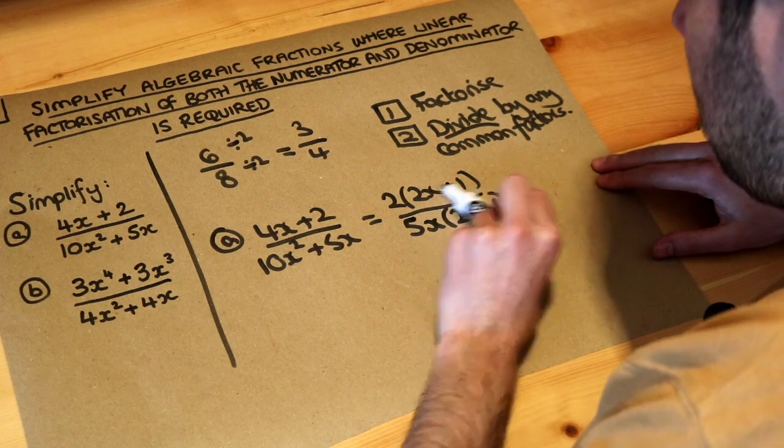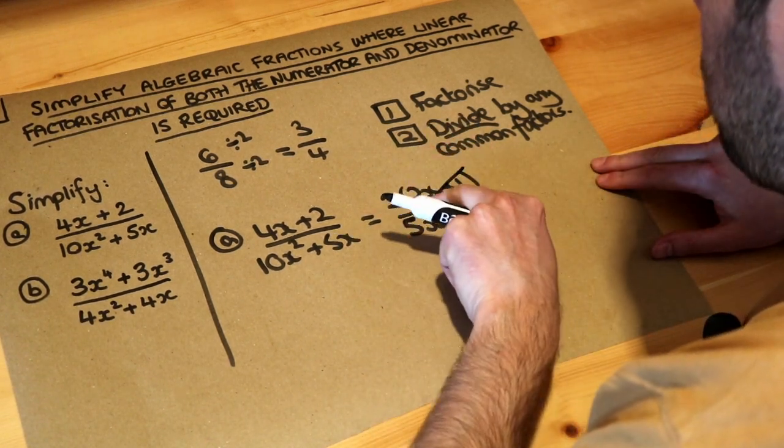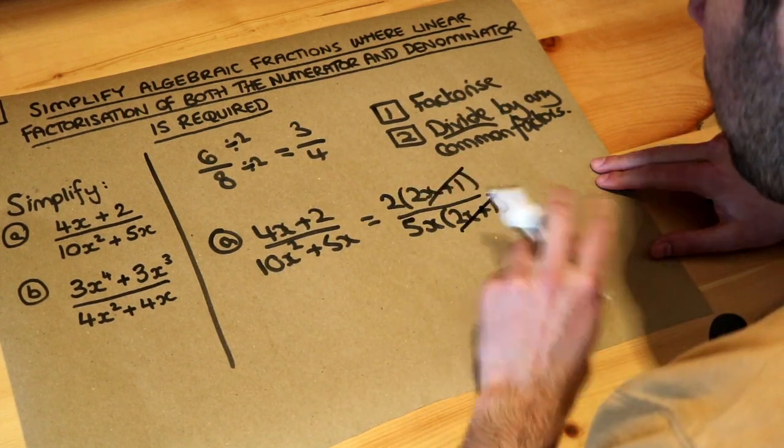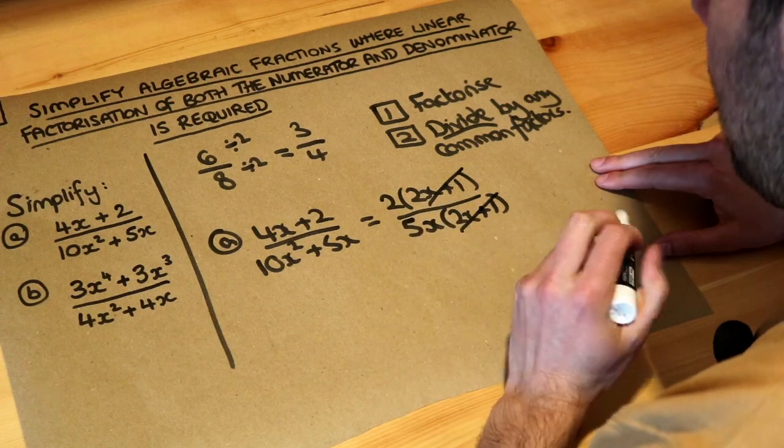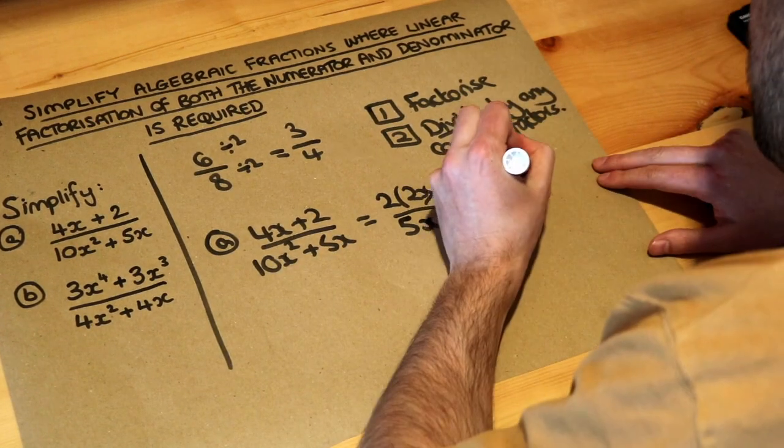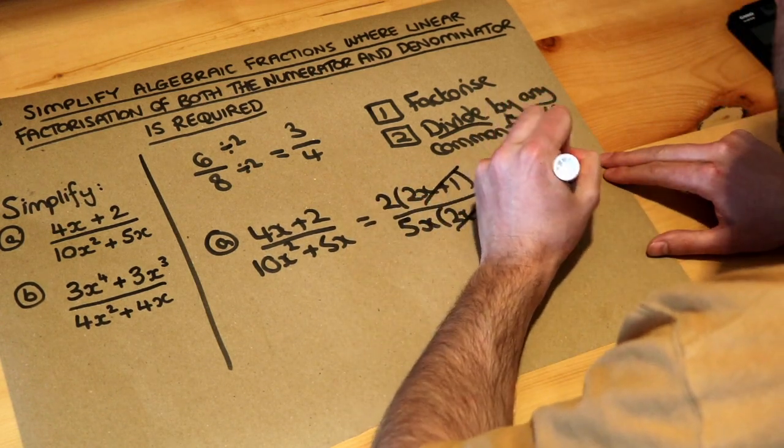So we divide the top by 2x+1. We can just cross it out because it's 2 times 2x+1 divided by the 2x+1 - it just goes. And you can similarly cross this one off at the bottom by dividing by 2x+1. Make sure you're always thinking that you're dividing, not subtracting anything like that. And what we're left with is just 2 over 5x, and that's the final answer.